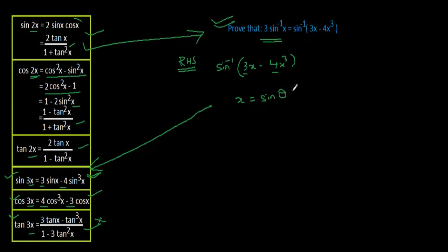I am taking x = sin θ, so this sine inverse will be the same as it is: sin⁻¹[3 sin θ - 4 sin³ θ].